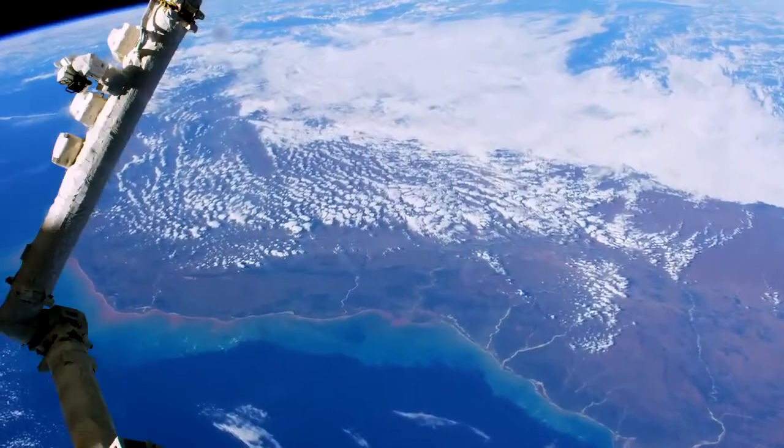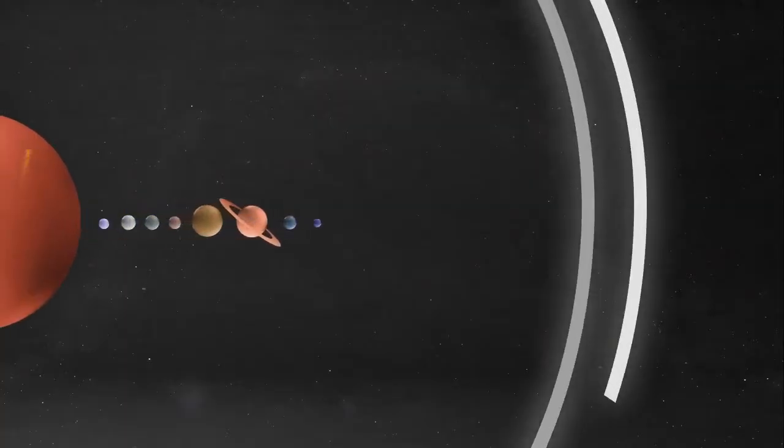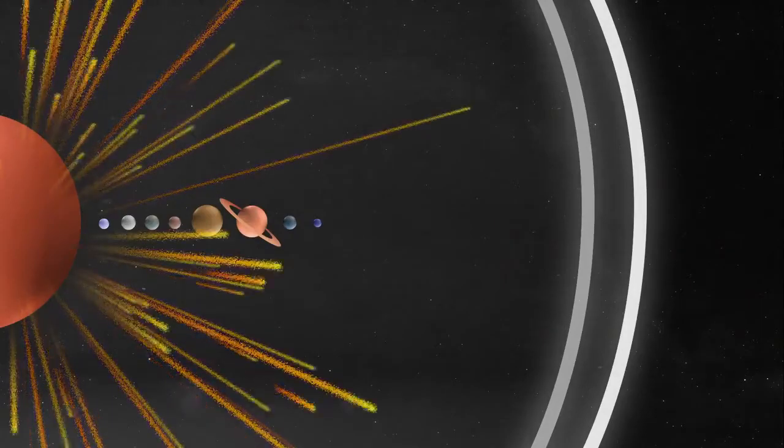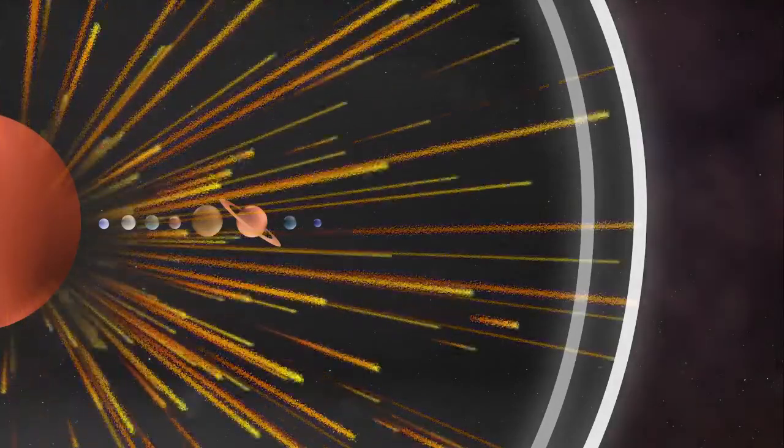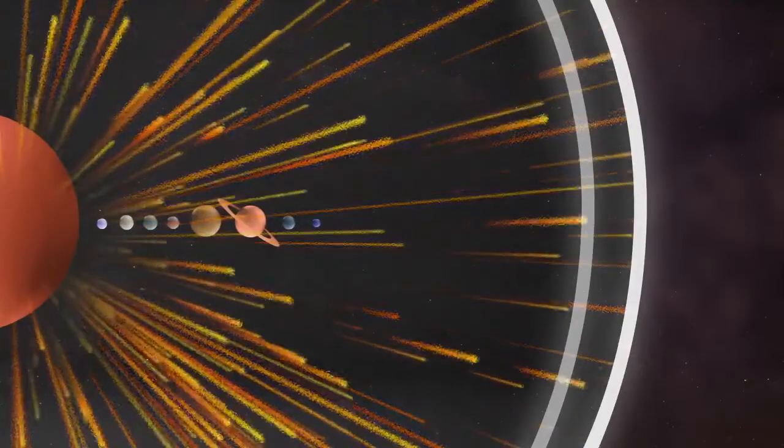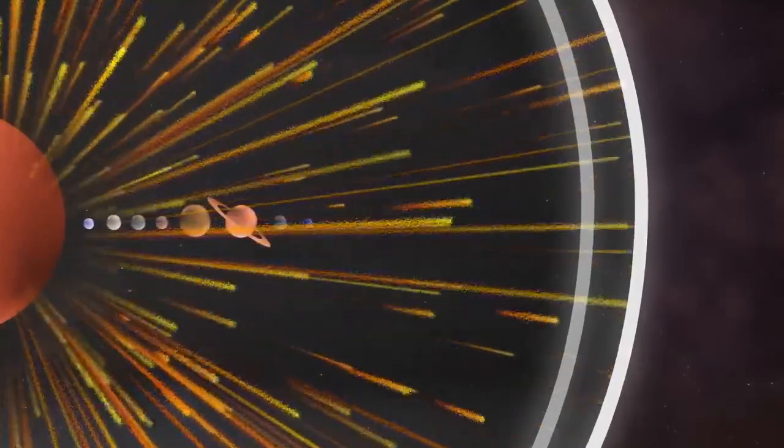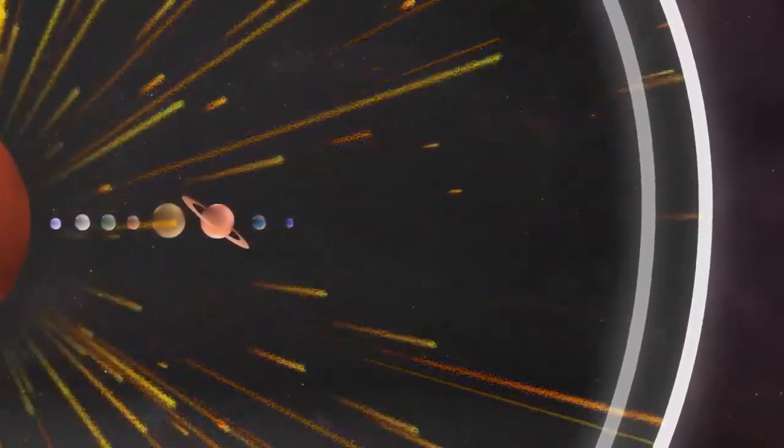But its borders aren't fixed. Around 11 billion miles from Earth, far past the planets, solar wind pushes against interstellar space. Scientists have been monitoring this boundary over the past decade, and they're seeing it change with the sun's activity.